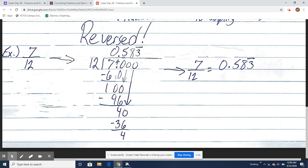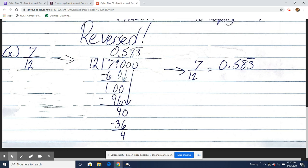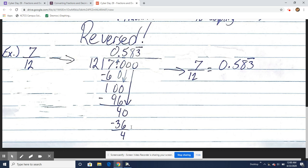12 goes into 100 eight times. 8 times 12 is 96. Do our subtraction. We get a remainder of 4. Bring down our 0. 12 goes into 40 three times. 3 times 12 is 36. Subtract and we get a remainder of 4.